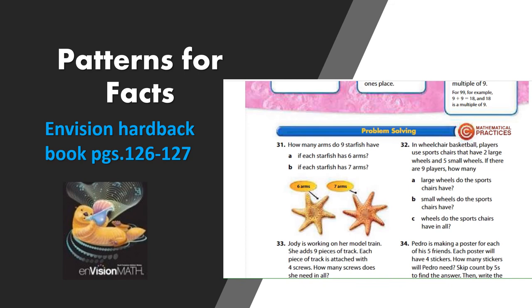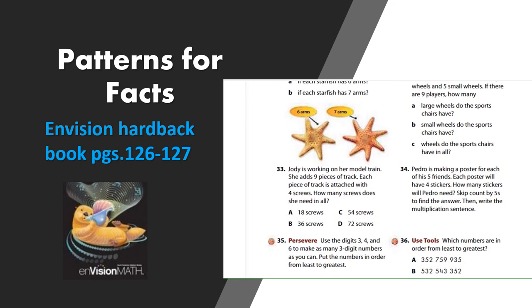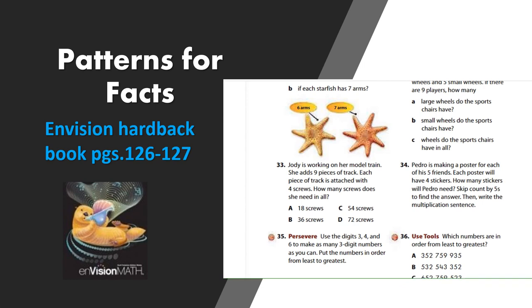For 33, it says, Jody is working on her model train. She adds nine pieces of track. Each piece of track is attached with four screws. How many screws does she need in all? So again, every piece of track is going to need nine screws to attach it. So again, think about your multiples of four because we're using four screws for each piece of track. And there are nine tracks.